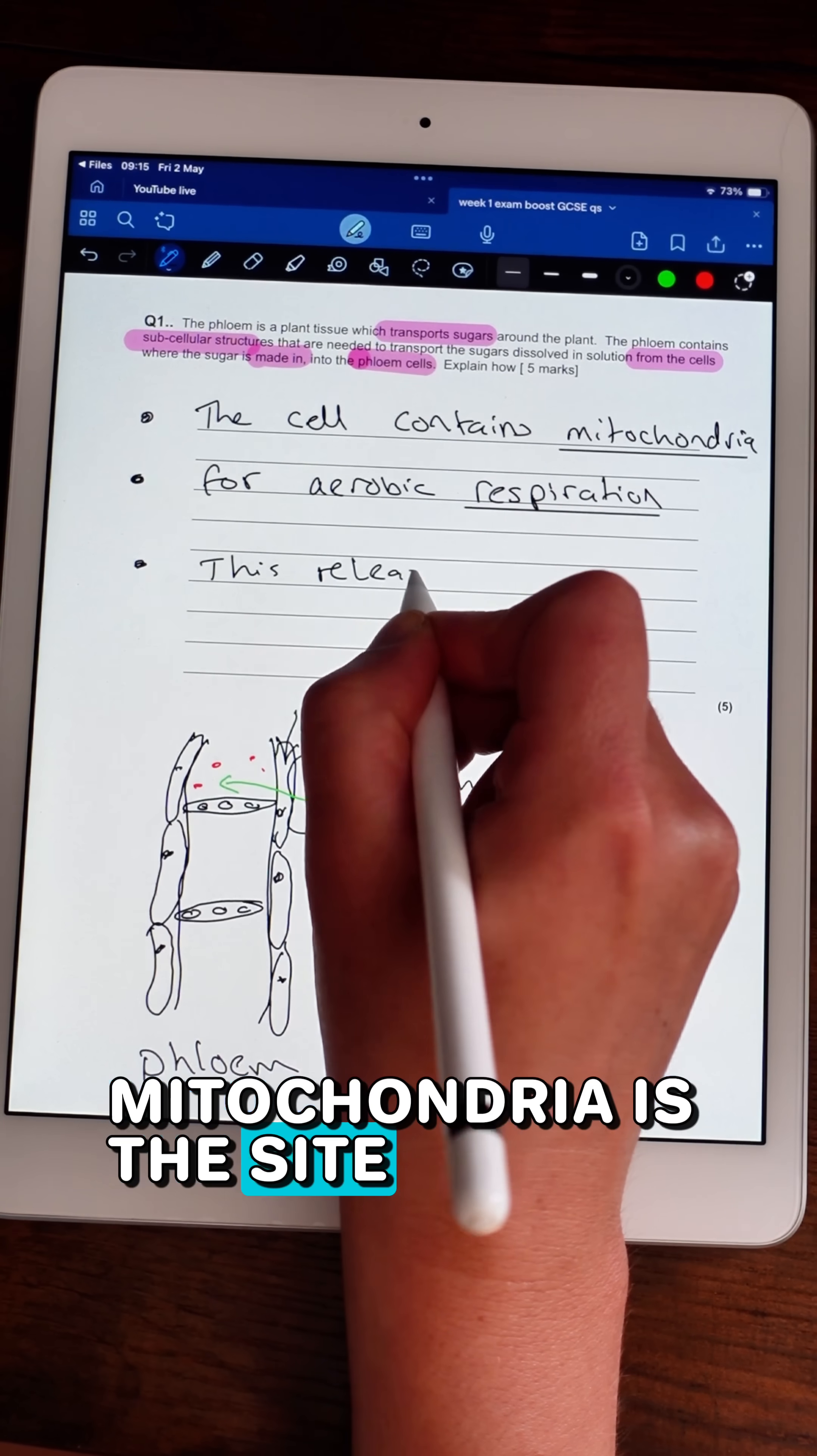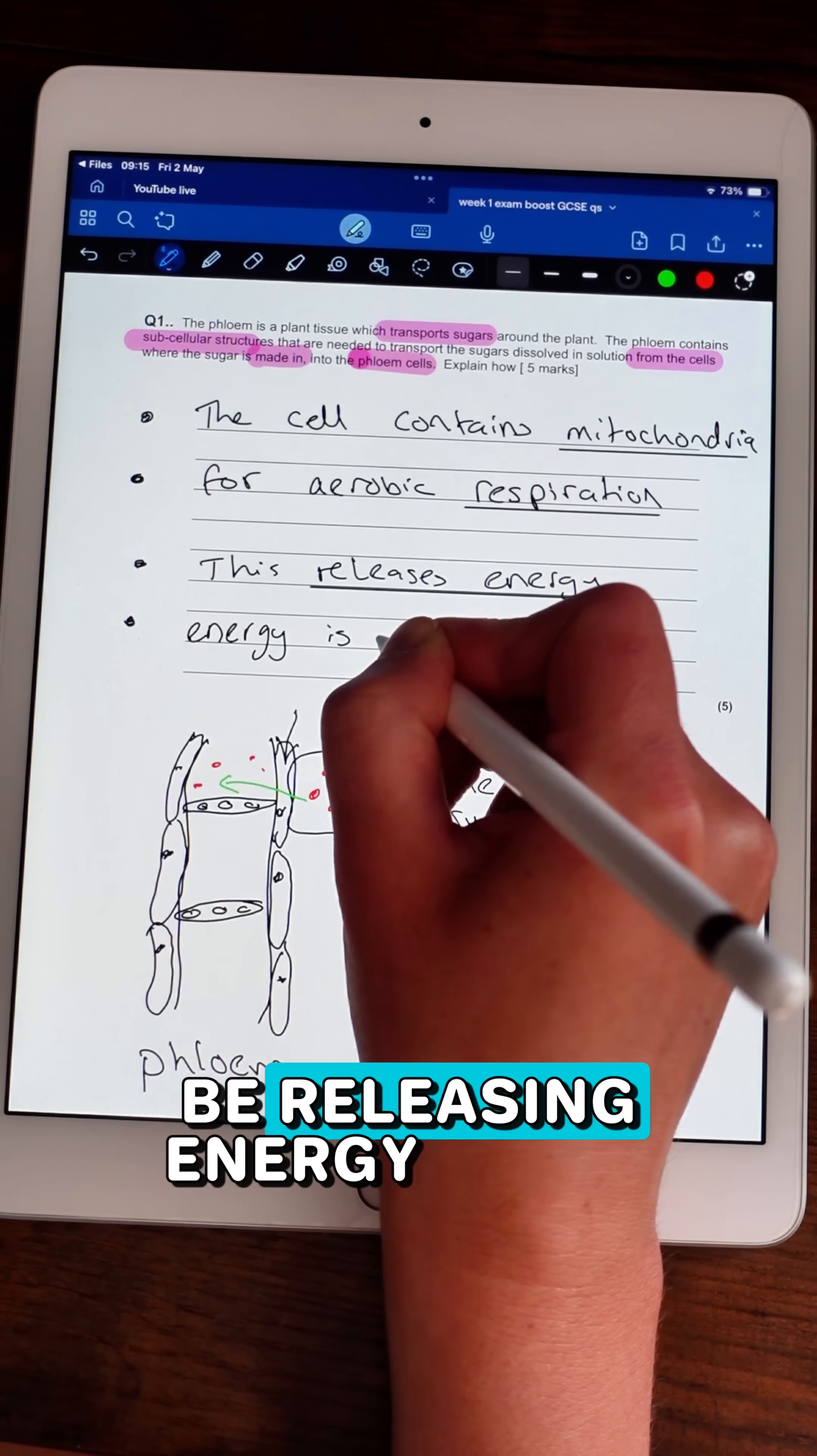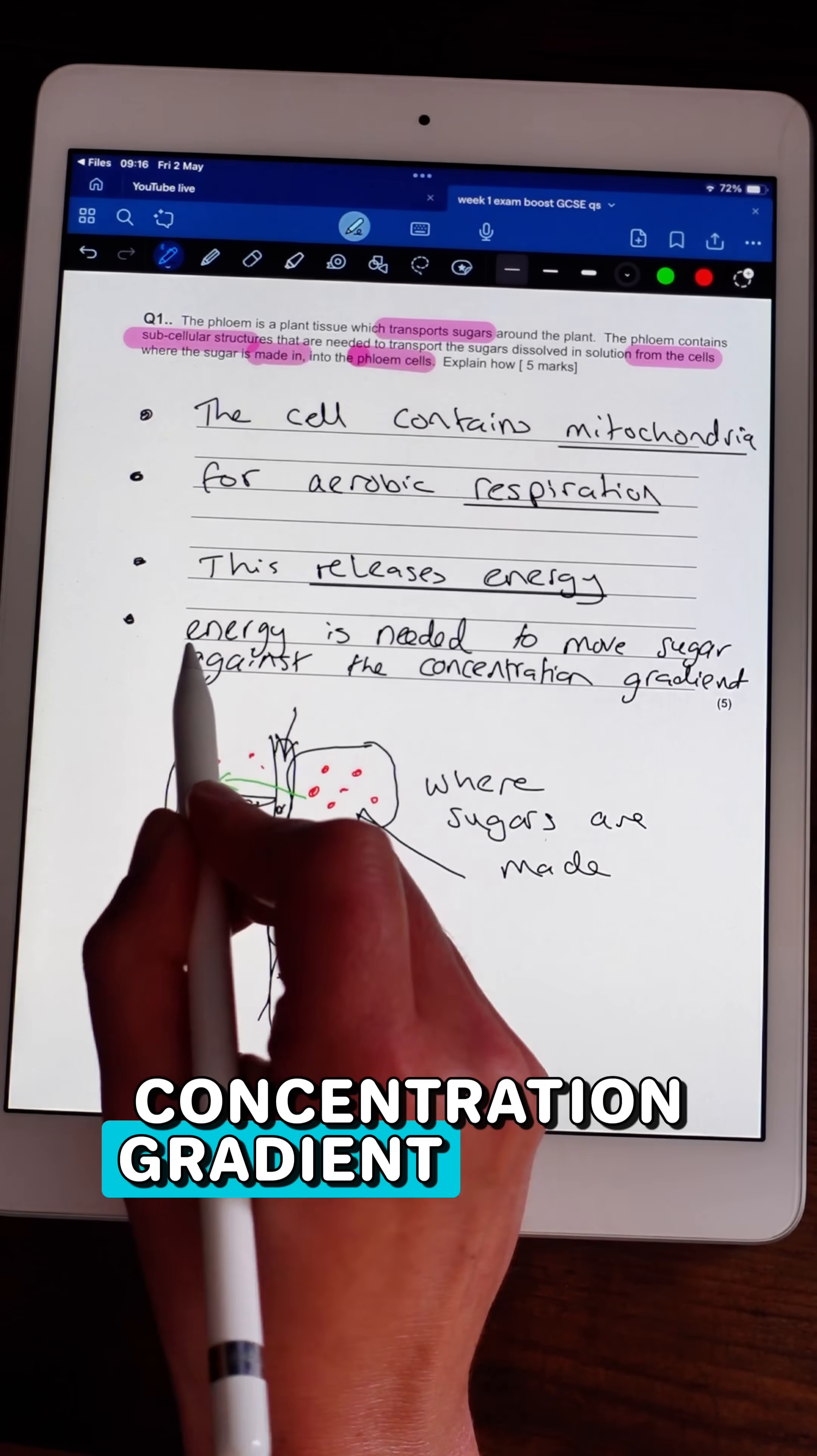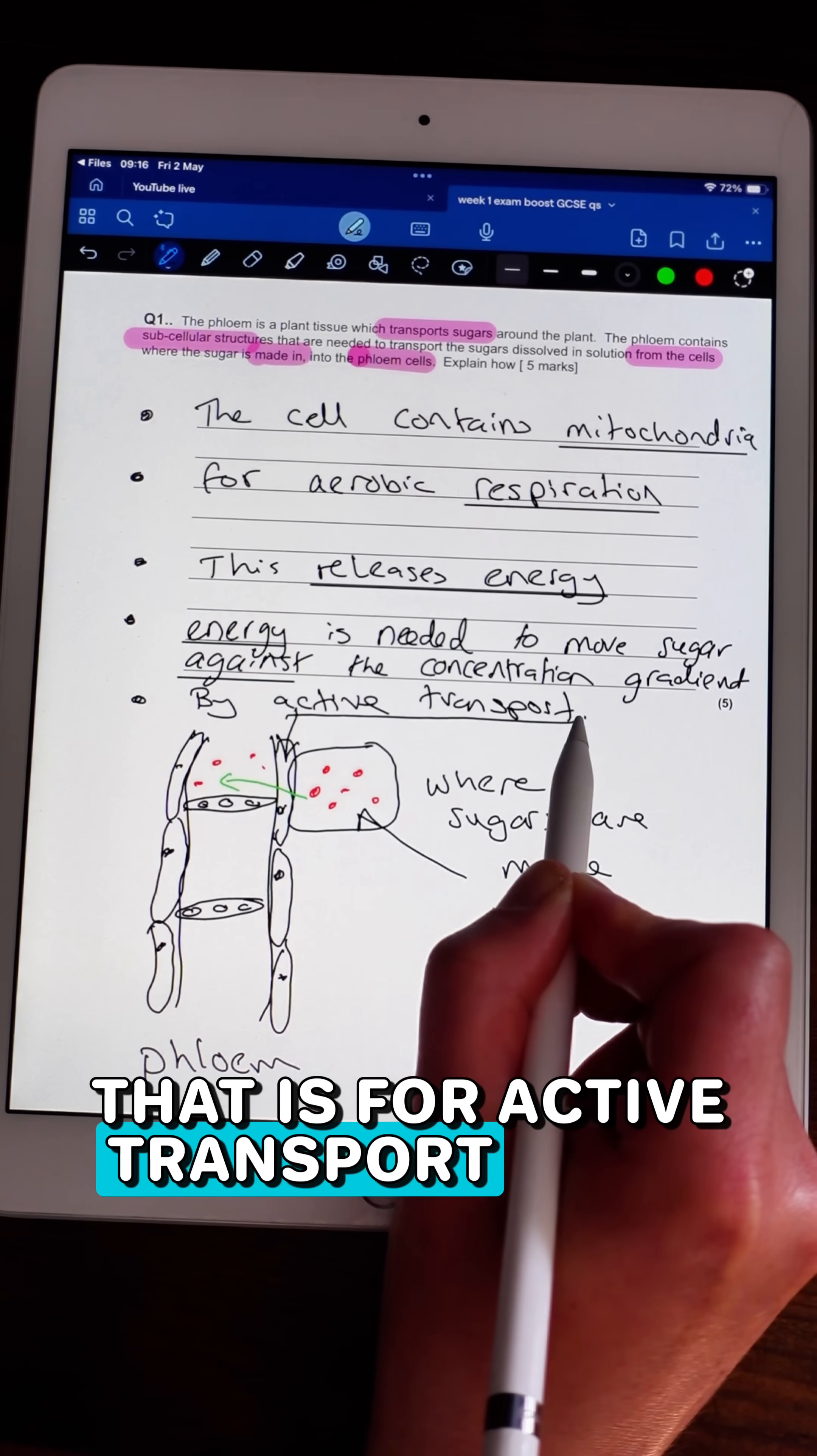Mitochondria. The mitochondria is the site of aerobic respiration. Mitochondria is going to be releasing energy. Energy is needed to move the sugars against their concentration gradient, and then mark number five is bringing it back to that is for active transport.